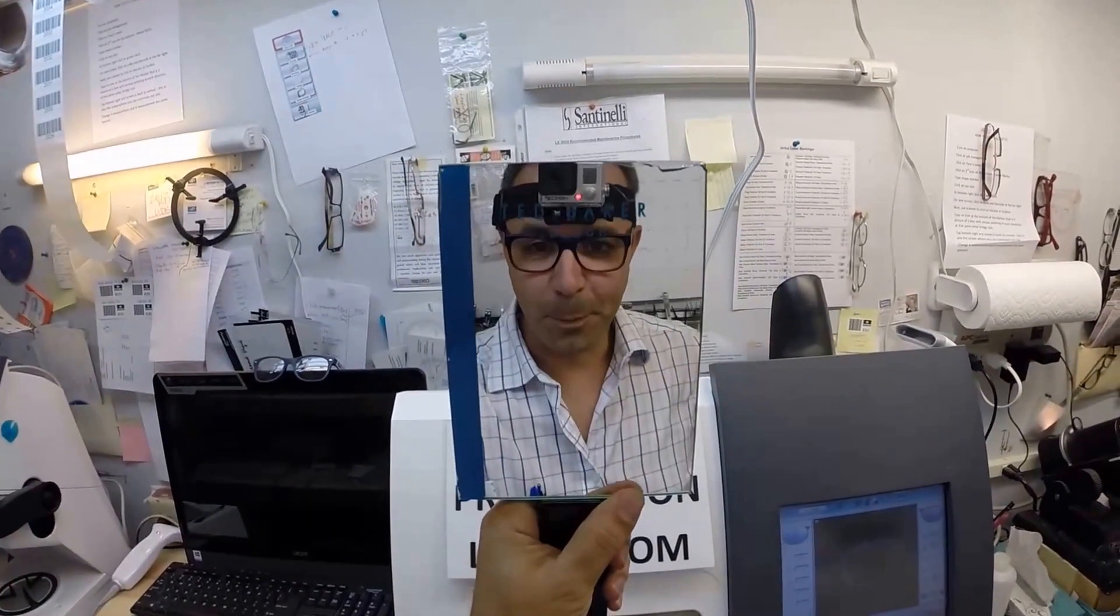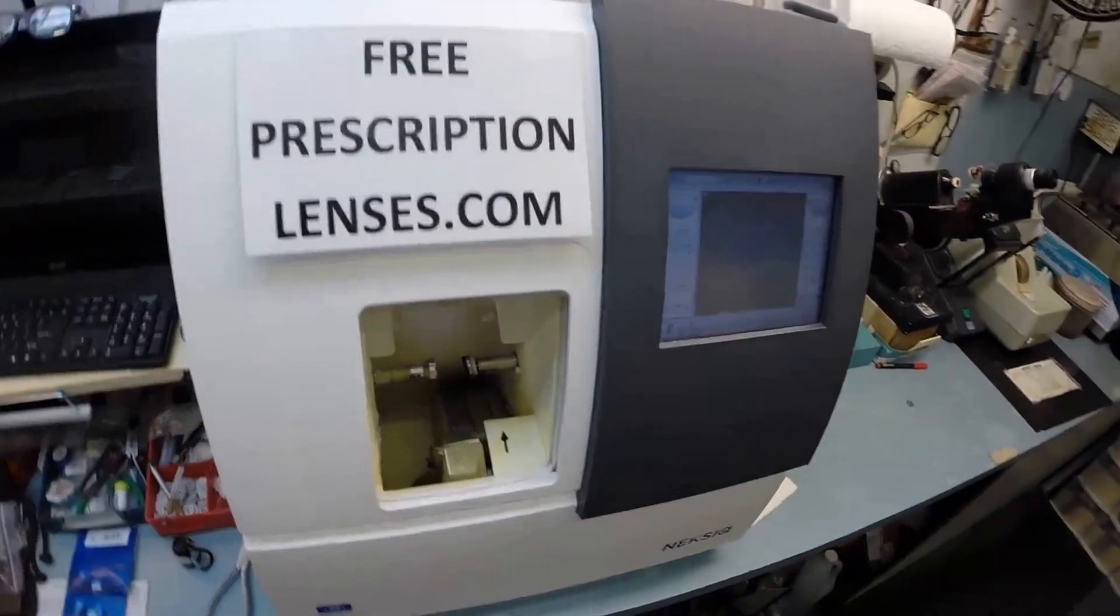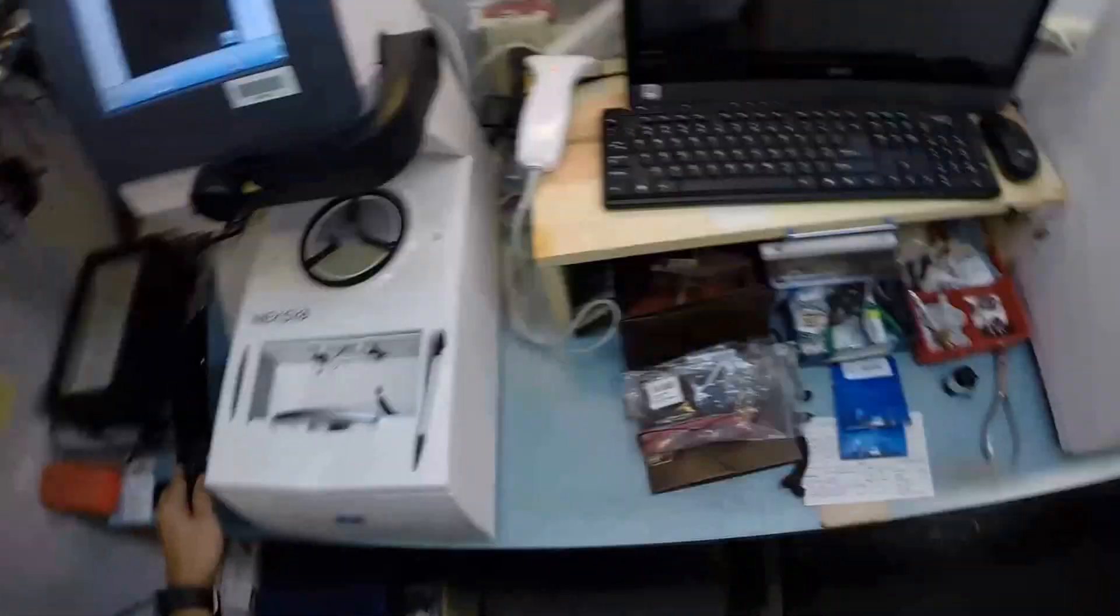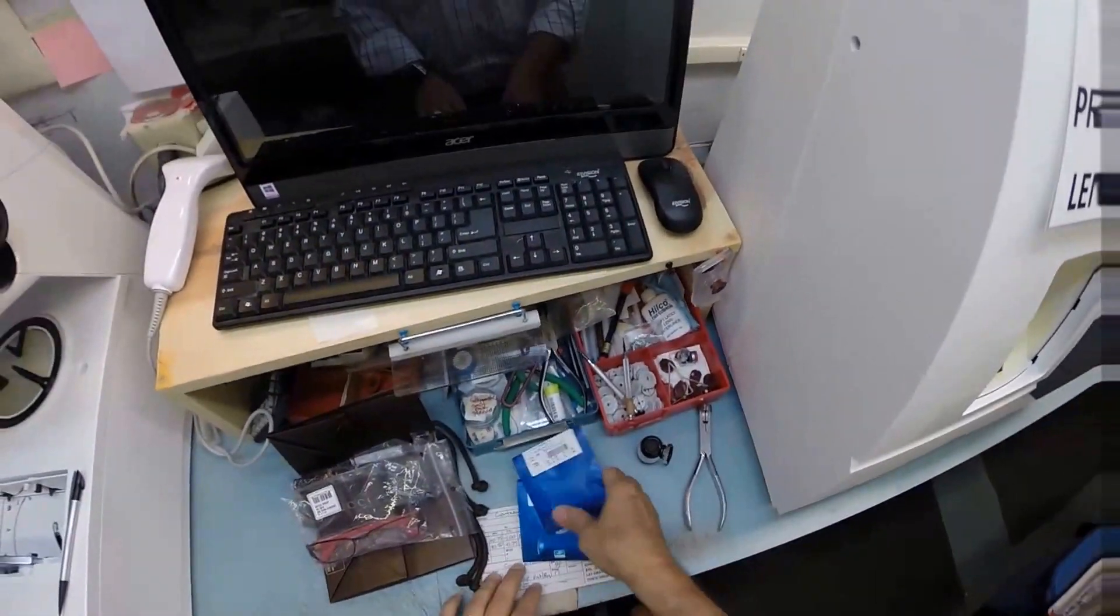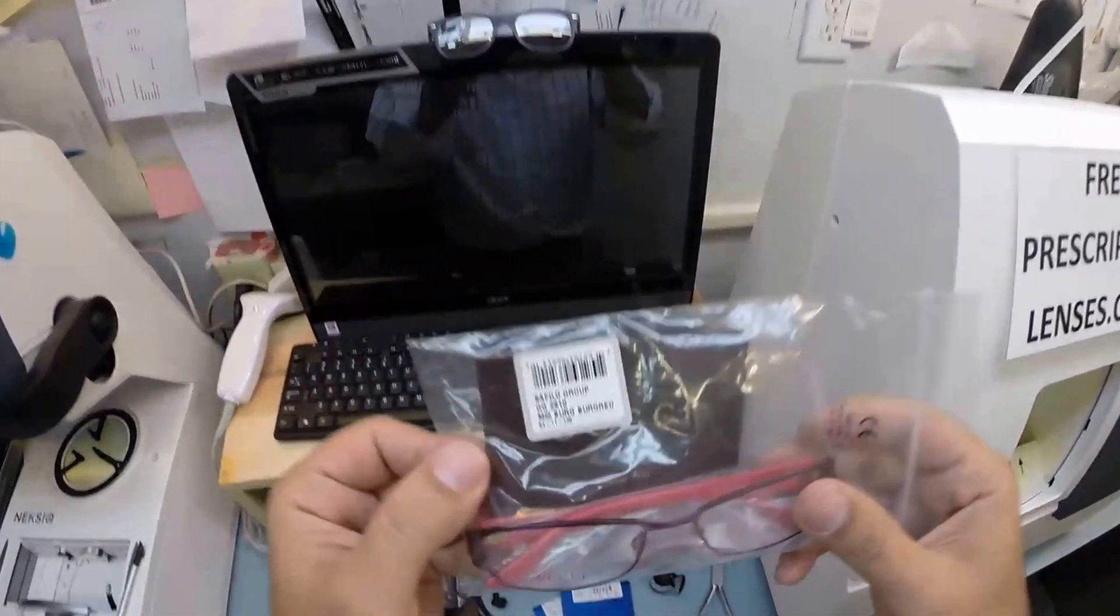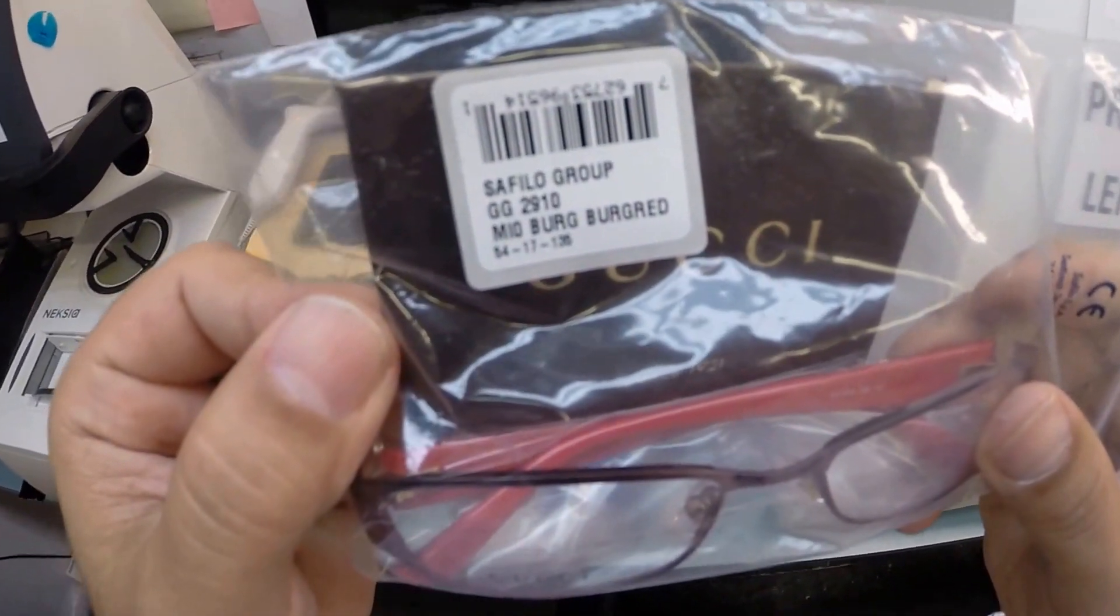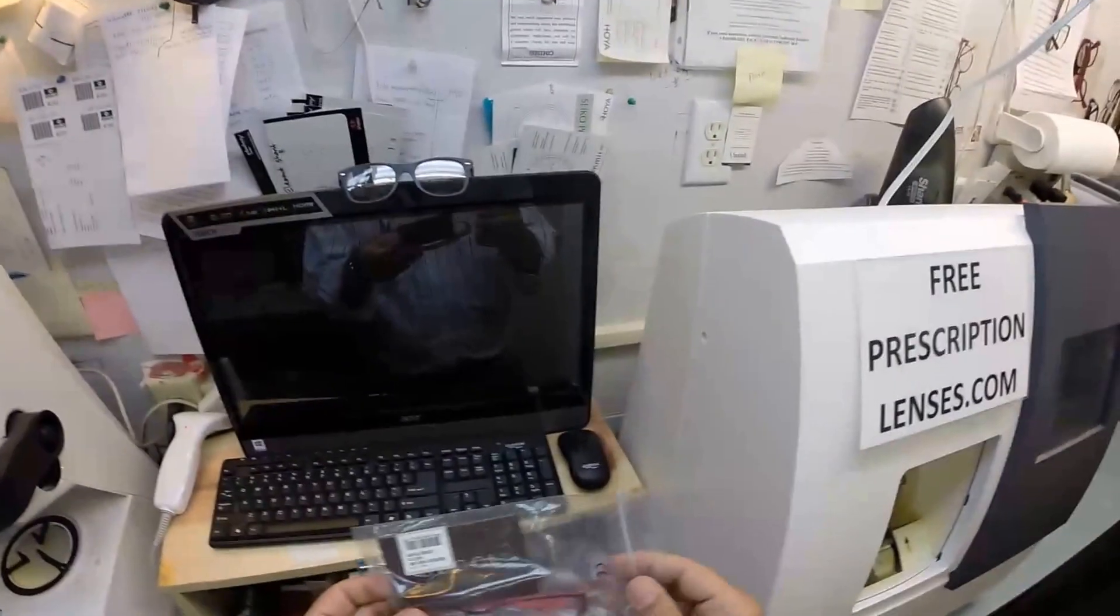Hey Courtney in Graham, North Carolina. Should I call you Court? Matthew here with FreePrescriptionLenses.com and with the help of my GoPro camera, I'm going to show you how I cut prescription Crizal Alize lenses for your Gucci 2910 color M.I.O., which is the pink burgundy in the 54 eye size.